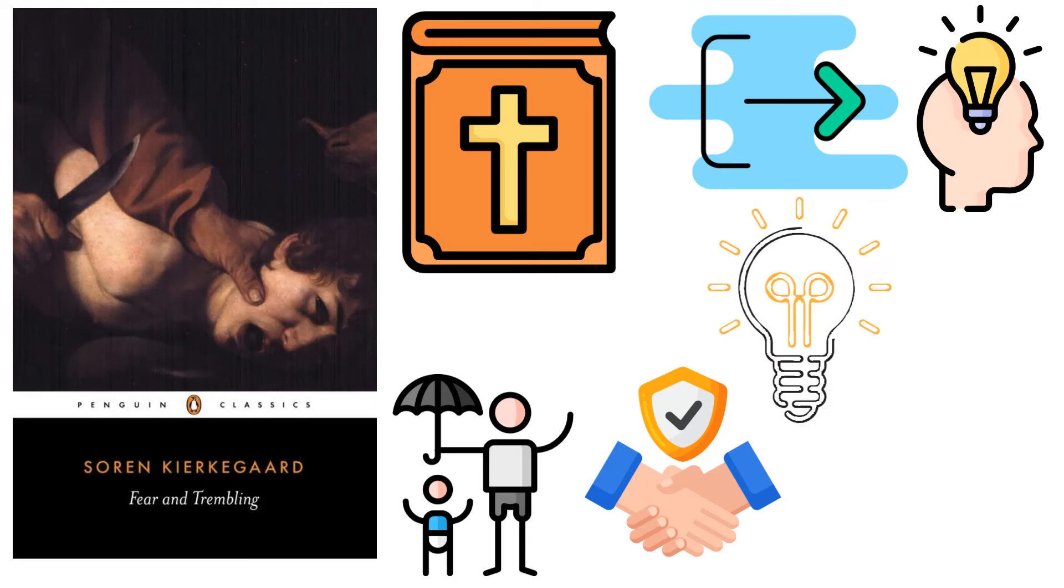He introduces the reader to four versions of Abraham's narrative in the short prelude that follows. The first portion concludes with the panegyric upon Abraham, which contends that there is no reasonable way to describe Abraham, what he did, and why.